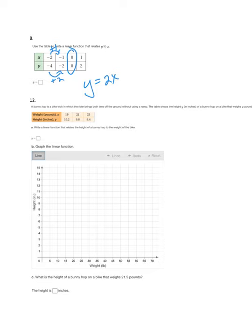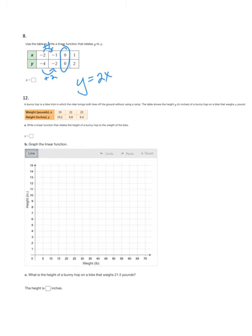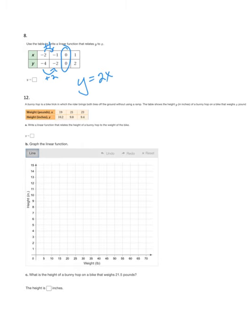Next is number 12. It's talking about this bunny hop, a bike trick in which the rider brings both tires off the ground without using a ramp. The table shows the height y in inches of a bunny hop on a bike that weighs x pounds. It looks like generally the heavier the bike, the less tall the hop is, which makes sense.